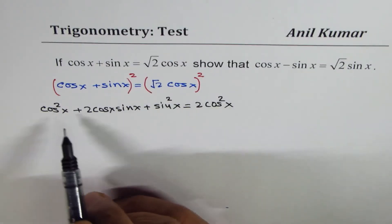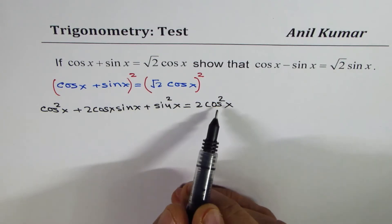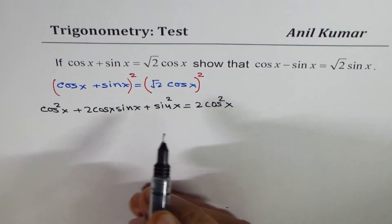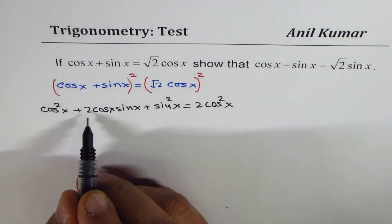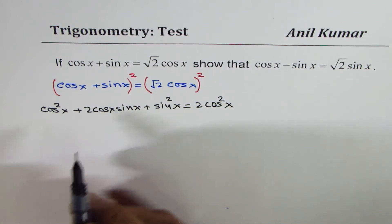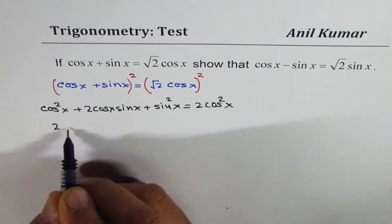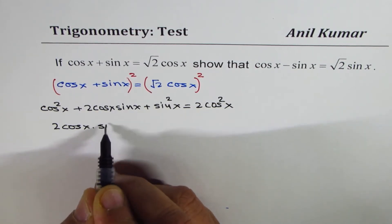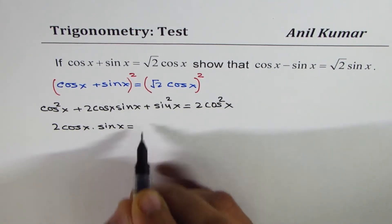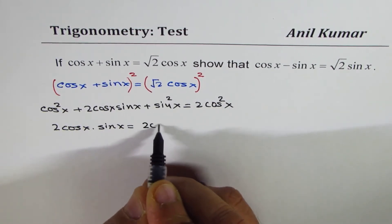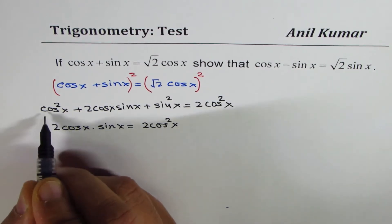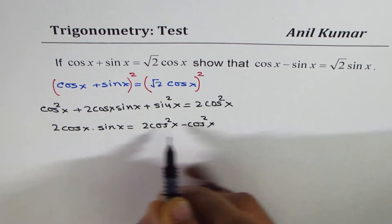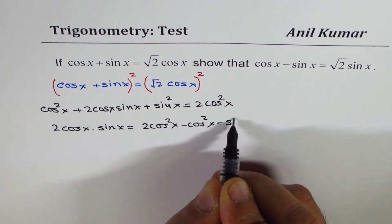When I take away from 2 cos²x one cos²x, I'll get cos²x, and sin²x will also be there. So leave 2 cos x sin x on the left side. We can say 2 cos x sin x equals cos²x minus sin²x.